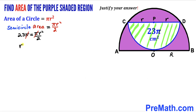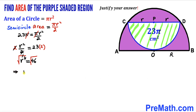We are left with r²/2 = 23. Multiplying both sides by 2, the 2's cancel and r² = 46. Taking the square root on both sides, the square and square root undo each other, so lowercase r = √46.